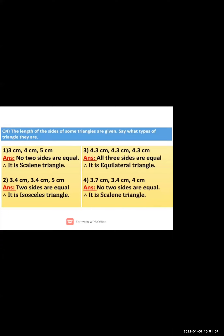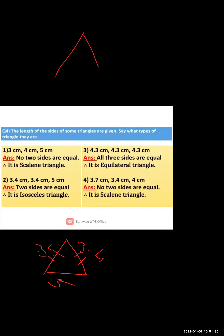Second: 3.4 cm, 3.4 cm, and 5 cm — two sides are equal (3.4 cm and 3.4 cm), so it is an isosceles triangle. Third: 4.3 cm, 4.3 cm, and 4.3 cm — all three sides are equal, so it is an equilateral triangle.